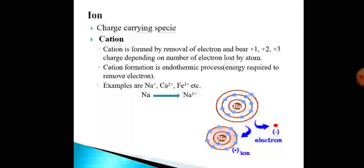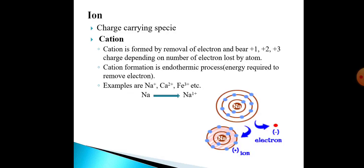The question is: why is cation formation an endothermic process? To remove an electron from an atom, energy must be supplied, which makes it endothermic. For example, sodium, calcium, and iron — when we remove one electron from a sodium atom, it is converted into a sodium cation.